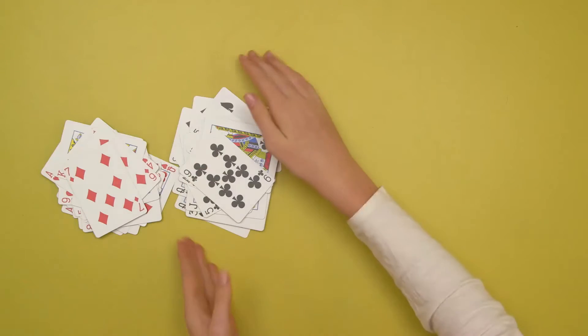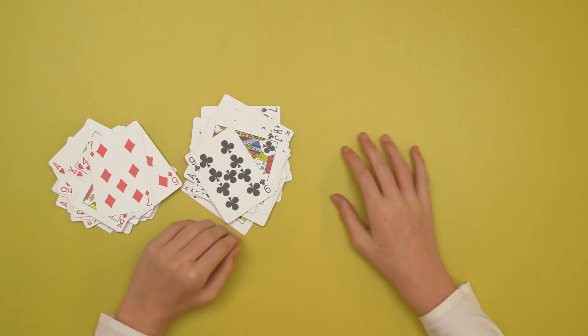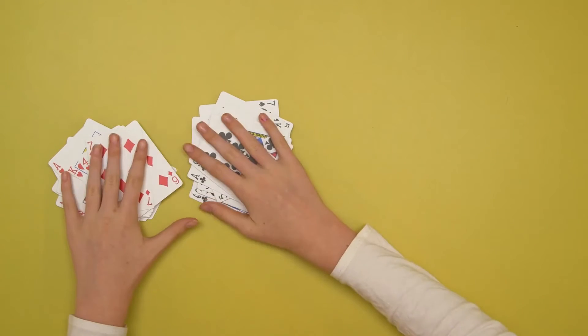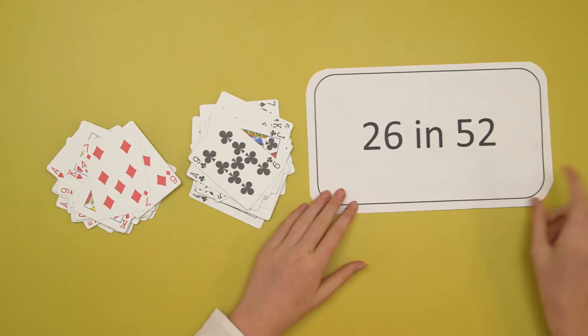But if you were to separate the 2 different colours in the deck, red cards and black cards, you would have 2 different coloured piles of cards with half of the deck in each pile.